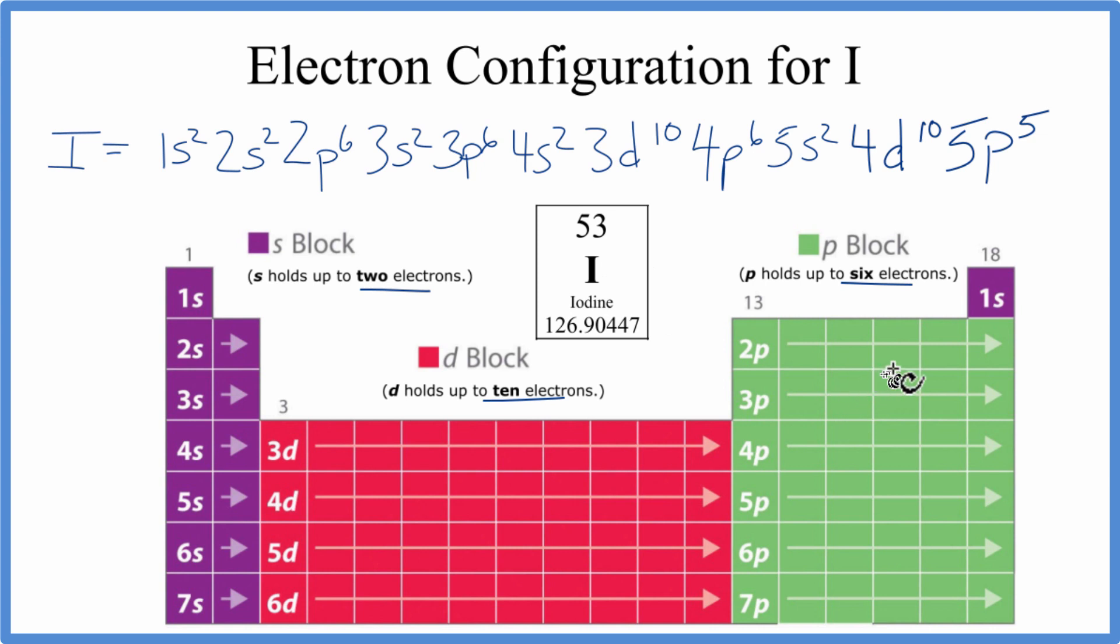We can also write a condensed notation. So we look at this last term, 5p5. We go over. So 5p, 1, 2, 3, 4, 5. That's where iodine is at on the periodic table.